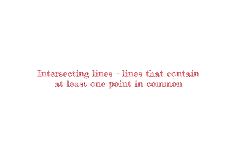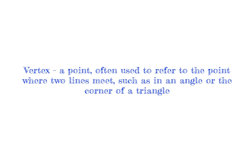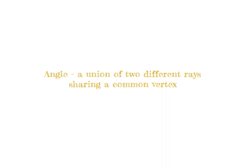Next, we have intersecting lines, and intersecting lines are lines that contain at least one point in common. Next, we have vertex, and a vertex is a point often used to refer to the point where two lines meet, such as an angle or the corner of a triangle. An angle is a union of two different rays sharing a common vertex.